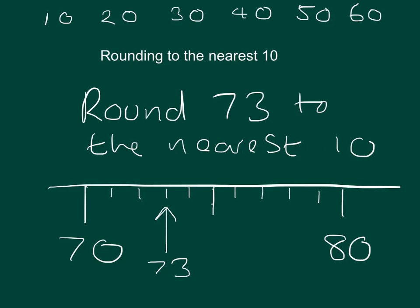Now if we have the number 78, I'll mark that in for you there, then 78 to the nearest 10 is closer to 80 than it is to 70. So I think it's fairly simple to see that less than 75, you're closer to 70, and above 75, you're closer to 80.